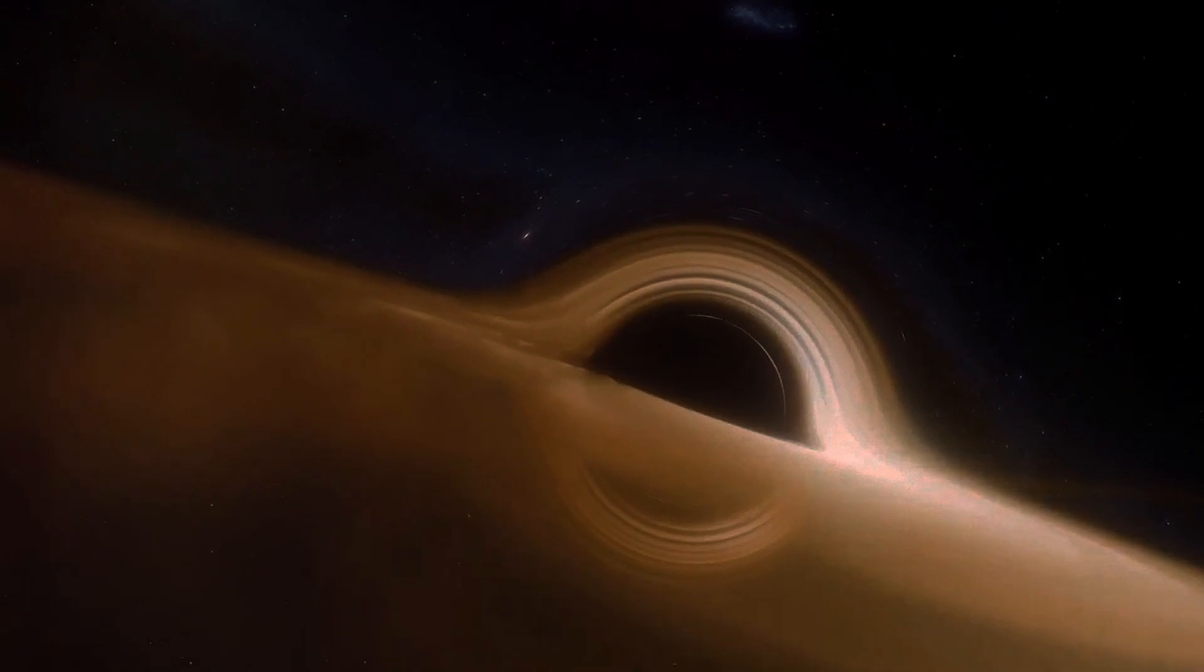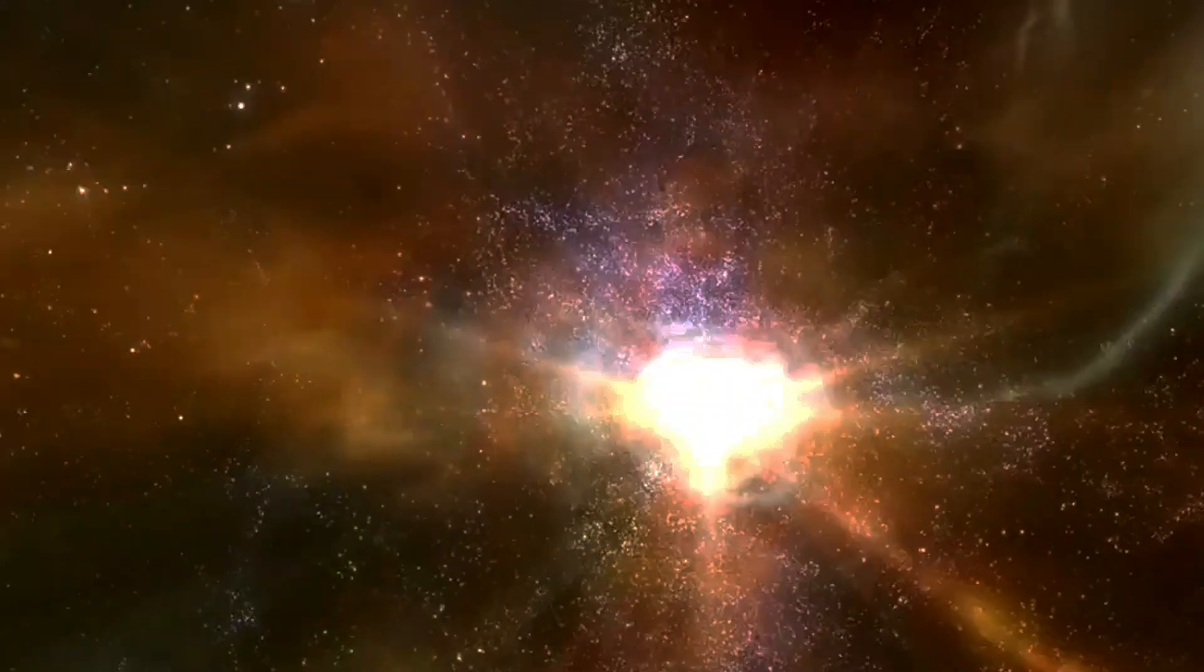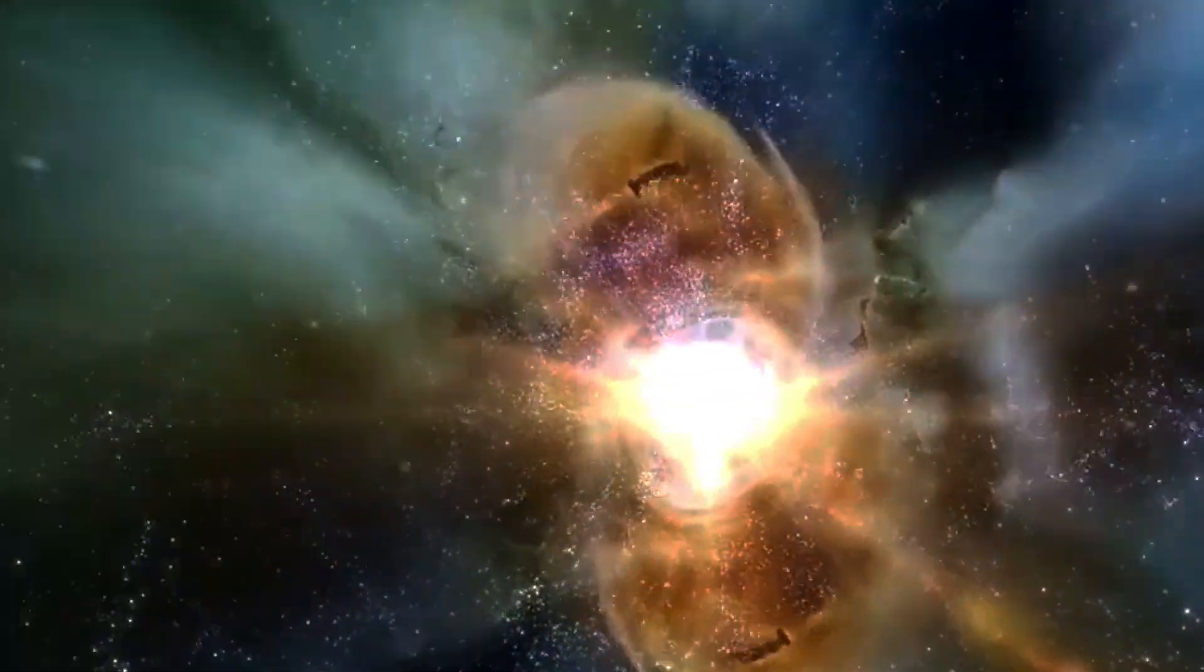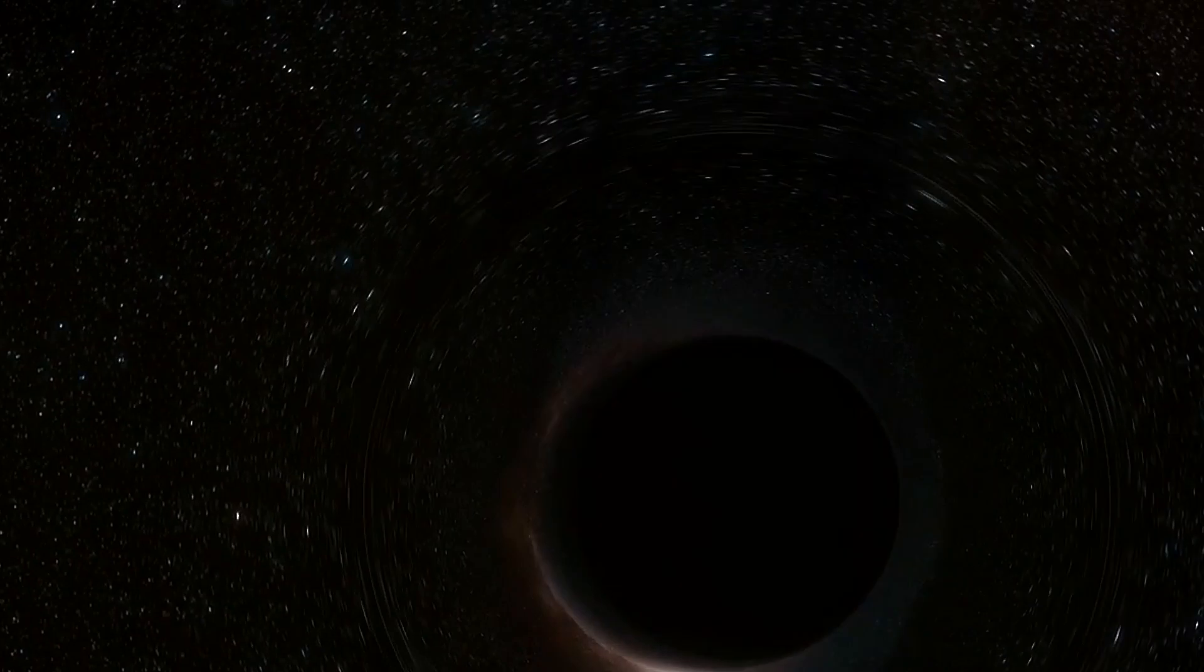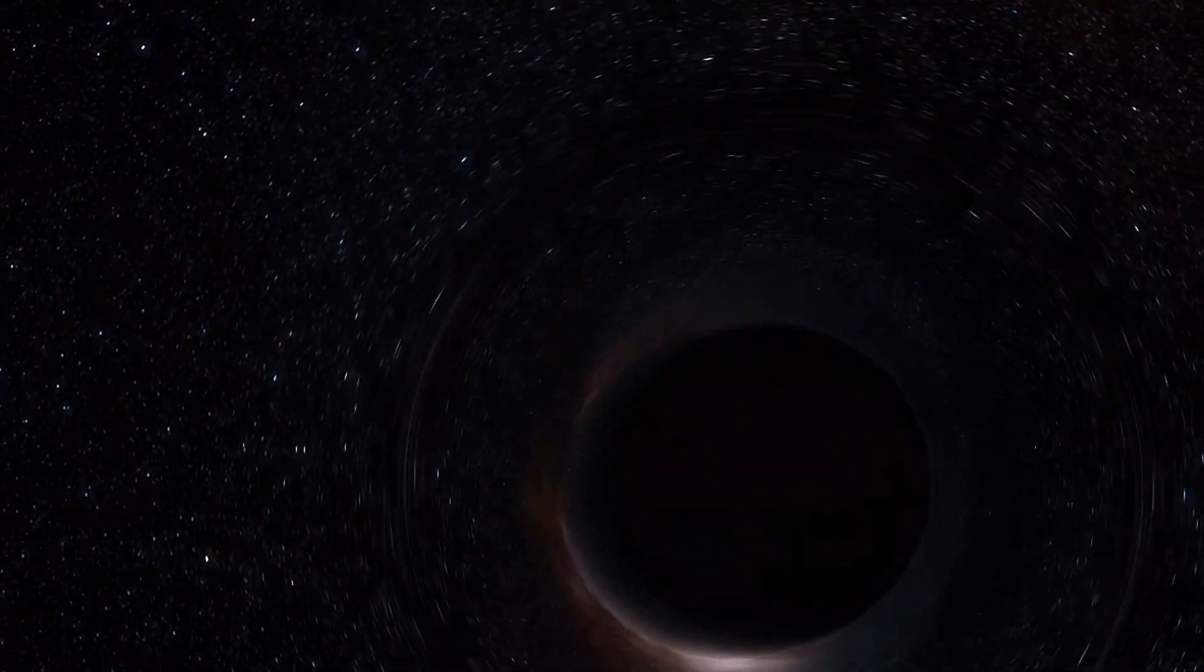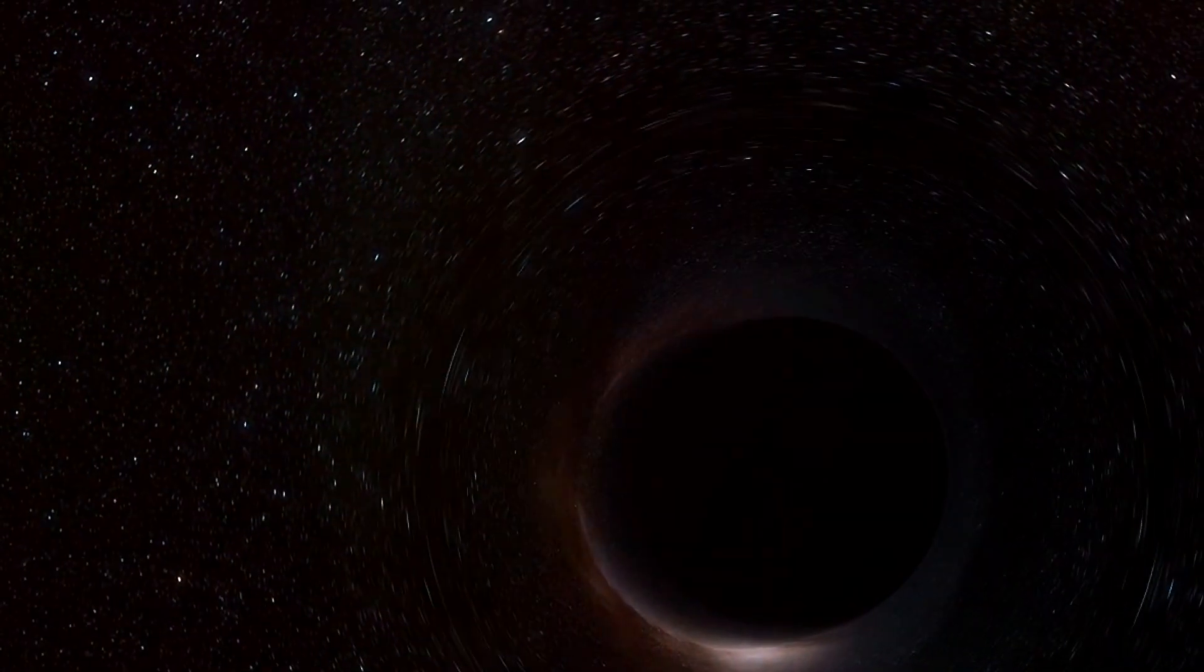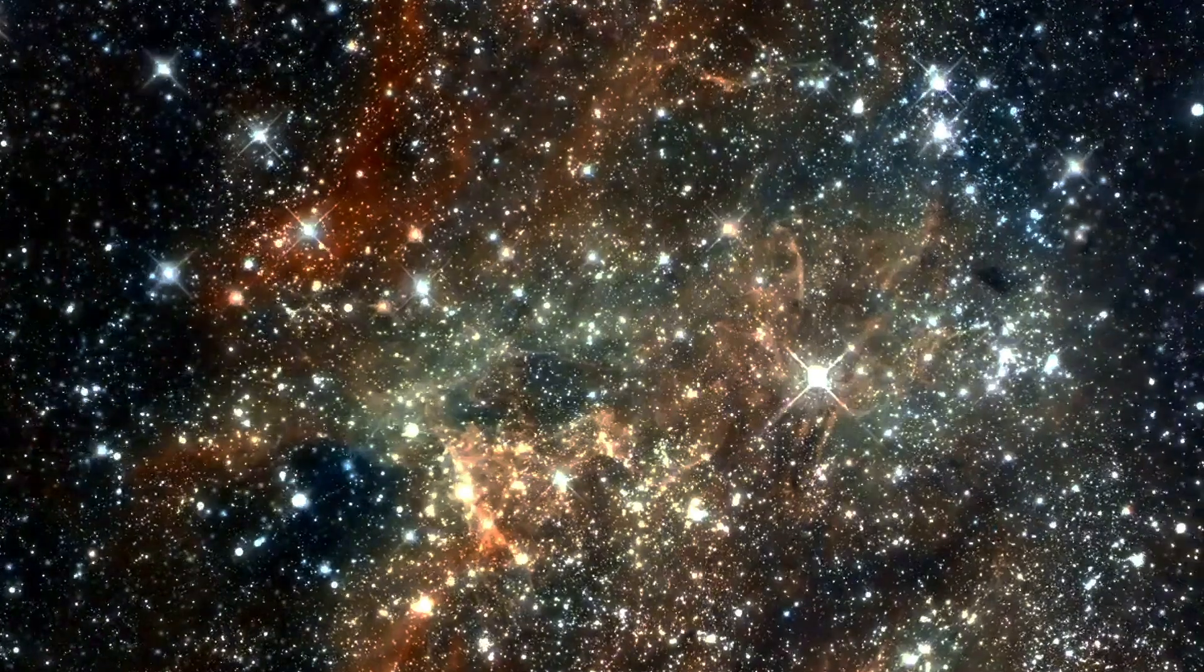As the core collapses, it warps space-time around it, creating an event horizon, the boundary where the escape velocity exceeds the speed of light. Nothing can escape from within this boundary, not even light. The singularity and its event horizon form a black hole. It continues to grow by absorbing mass from its surroundings, including stars, gas, and even light.